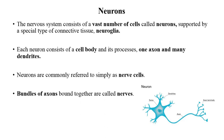The neuron is the structural unit of the nervous system. The nervous system consists of a vast number of cells called neurons. The neuron is covered with a special type of connective tissue known as neuroglia. The neuron is divided into three parts: soma, body, dendrites, and axons. Neurons are commonly referred to as nerve cells.